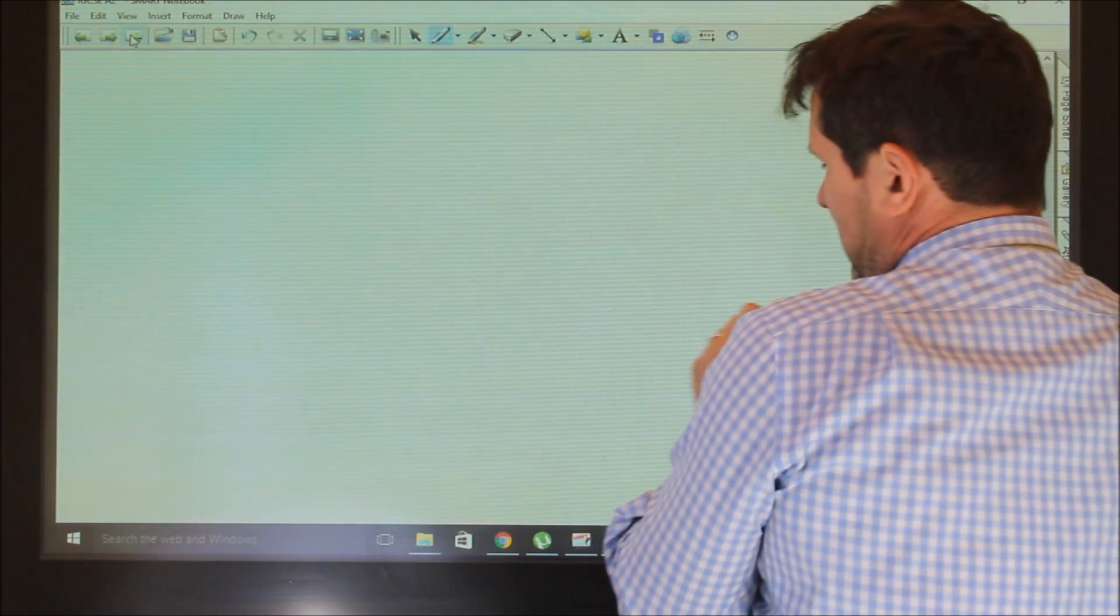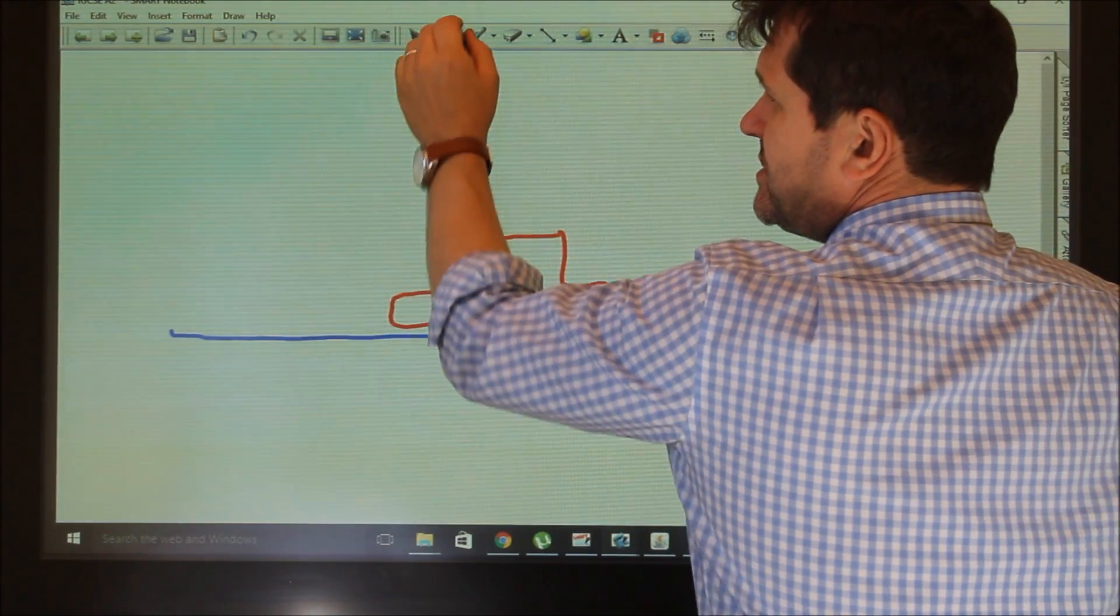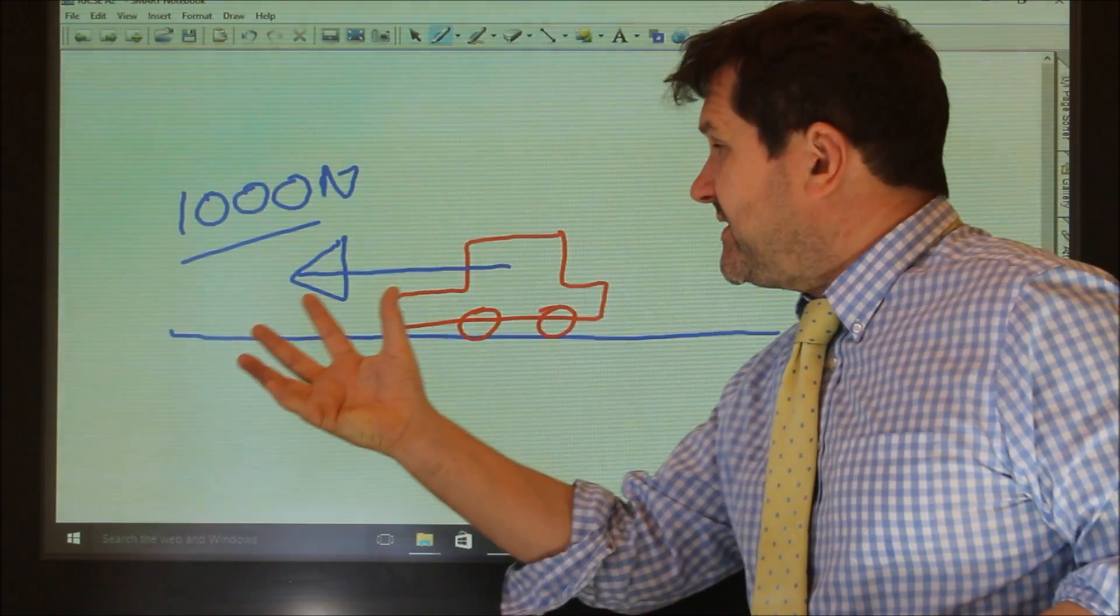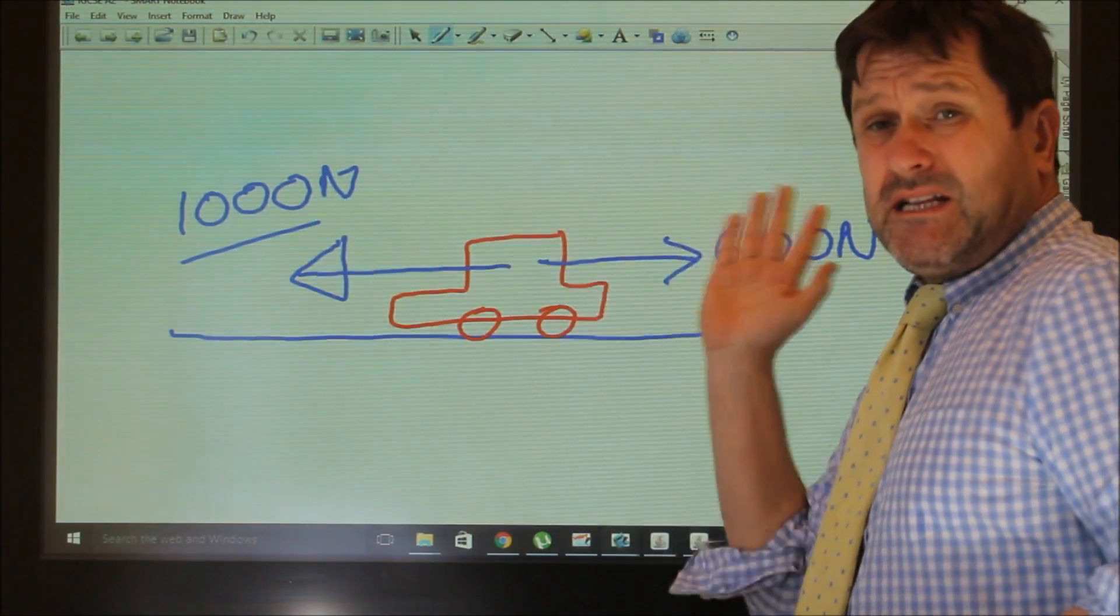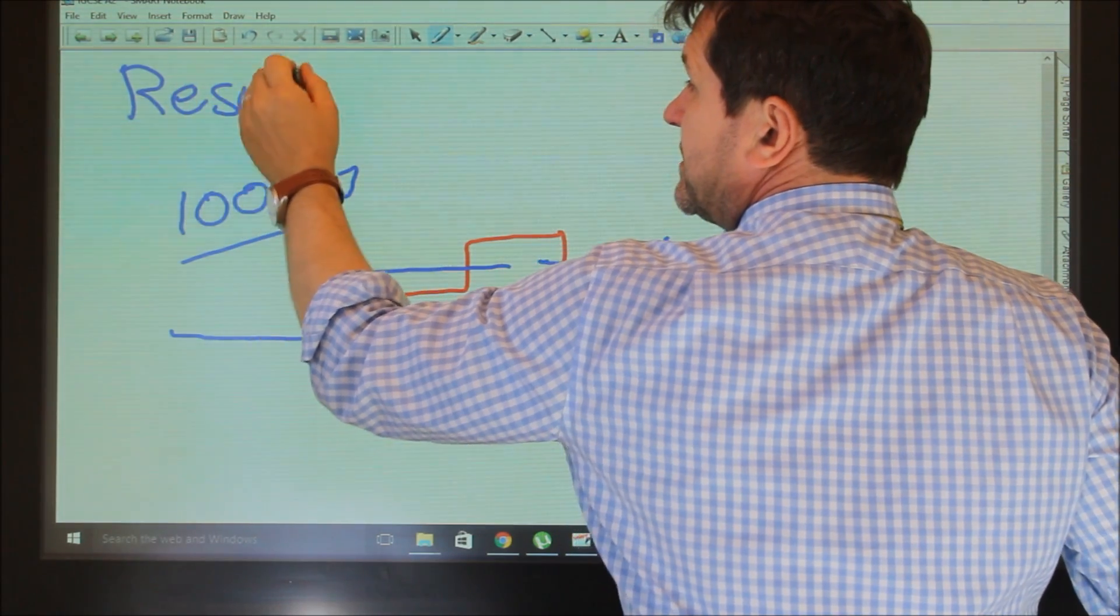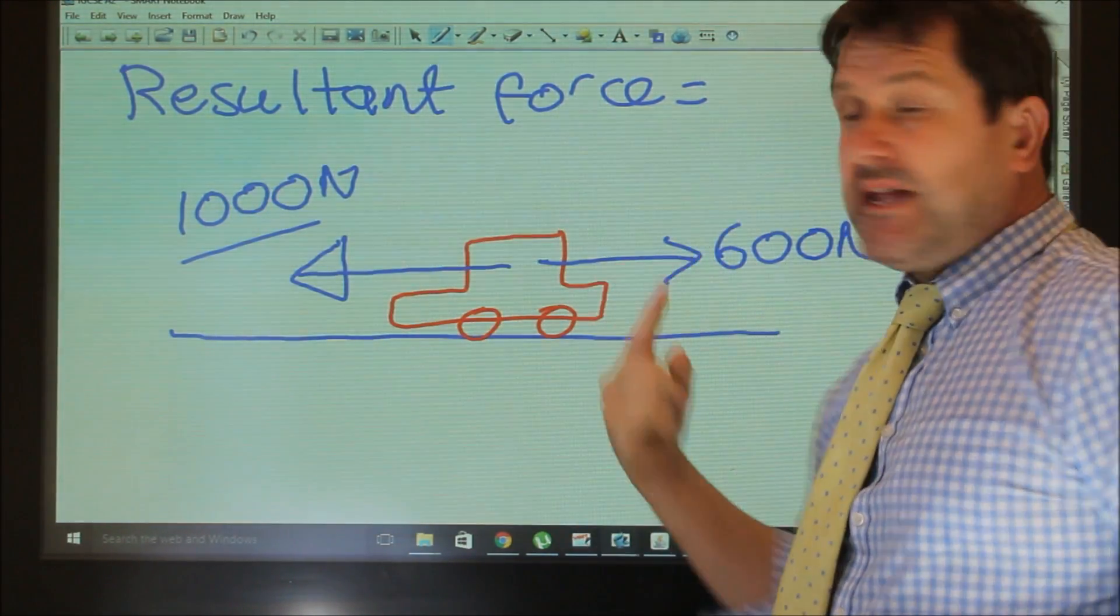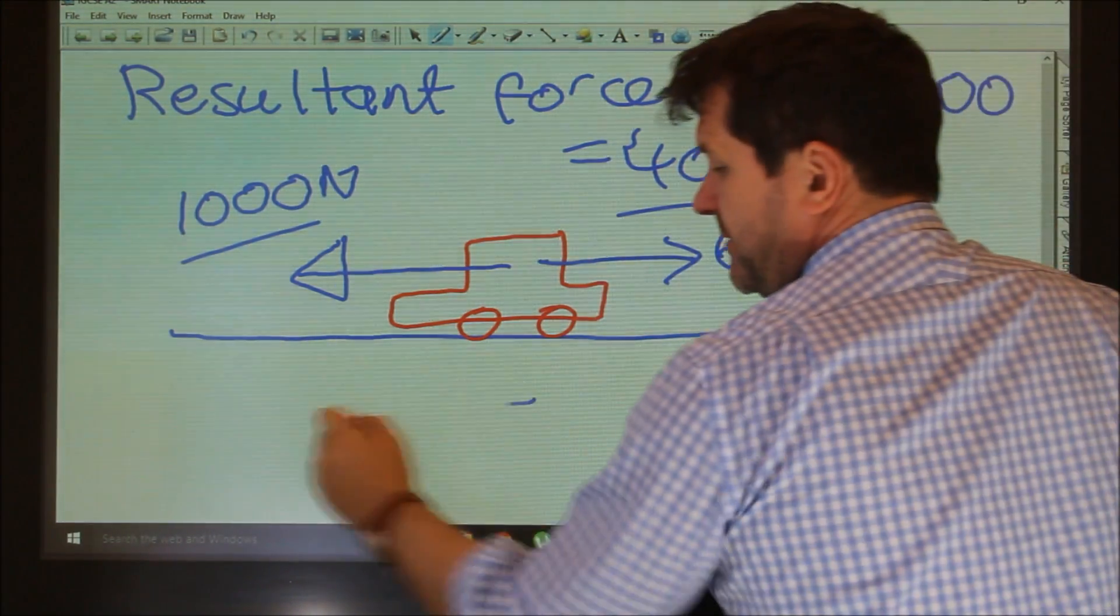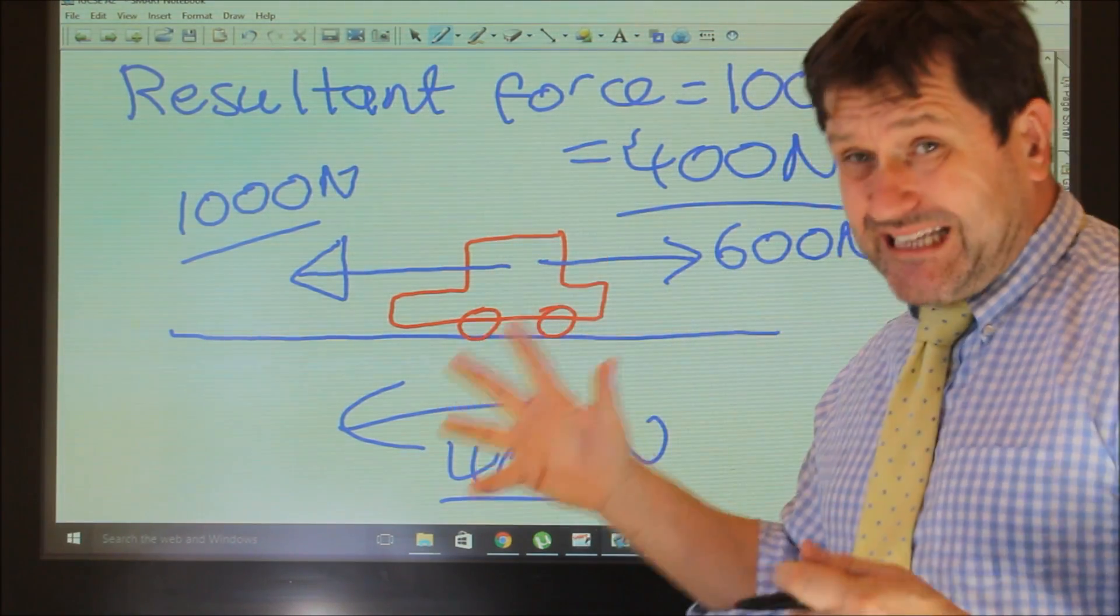So for example, if we have our car, and if we've got a force of, say, 1,000 newtons in this direction, that's provided by, say, the engine, and if we have a force of, say, 600 newtons caused by friction, air resistance, then we've got an unbalanced force. And therefore, we have a resultant force, it's called. So we have a resultant force. And the resultant force is equal to this one, take away this one. So it would be simply 1,000, take away 600, which equals 400 newtons. And the resultant force is obviously 400 newtons in that direction. So that's how you'd label a diagram with forces and calculate the resultant force acting on something.